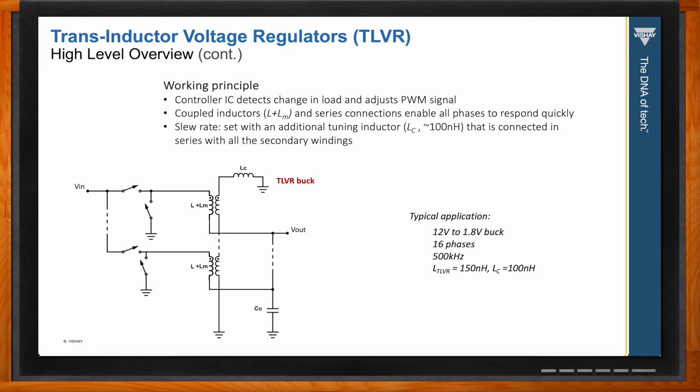For reference, a typical TLVR converter might be configured to step down 12 volts to 1.8 volts, switching at 500 kHz with 16 phases. The TLVR inductor might be 150 nanohenries and a tuning inductor somewhere around 100 nanohenries. So what kind of TLVR solutions does Vishay offer?